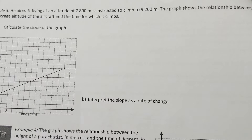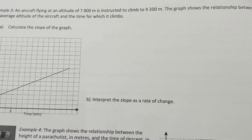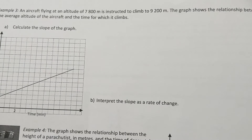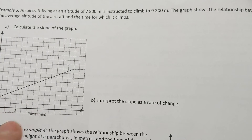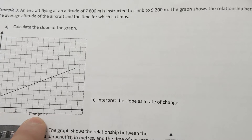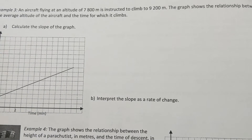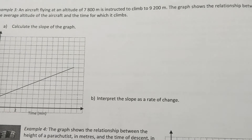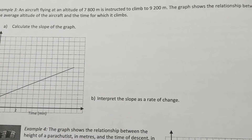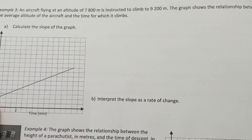Next example: an aircraft flying at an altitude of 7,800 meters is instructed to climb to 9,200 meters. The graph shows the relationship between altitude on the y-axis versus time on the x-axis. There is a squiggle break in the graph so it can be properly displayed, since the values are high. Each box represents 200 meters, and the line starts at 7,800.